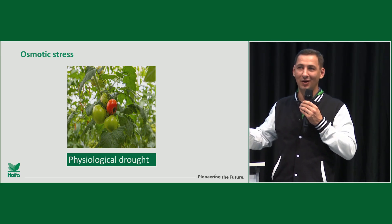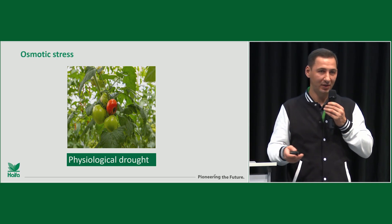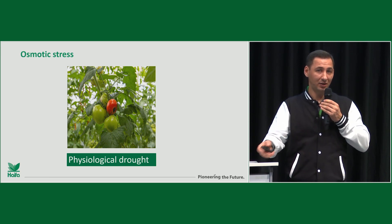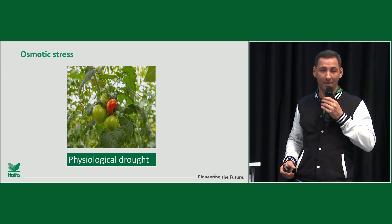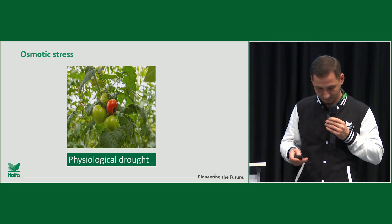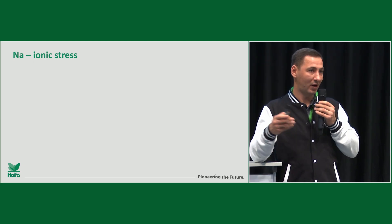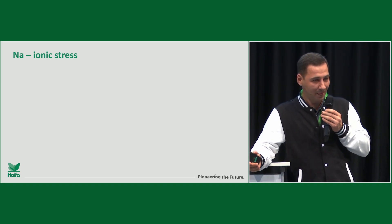When the extreme value of osmotic stress is reached, we can even expect physiological drought. That means on one side there is enough water in the substrate for plants, but on the other hand the water has such high salinity that the plant cannot take up the water - that's what we call physiological drought. But for osmotic stress, we can create it with other elements too - it's not only sodium. The other question is how sodium itself works on the plant - that's the ionic stress.